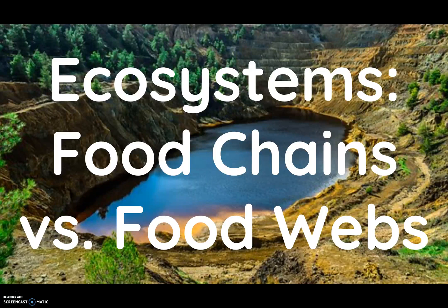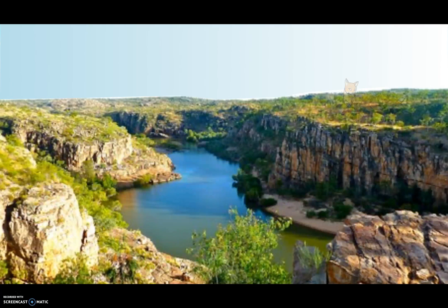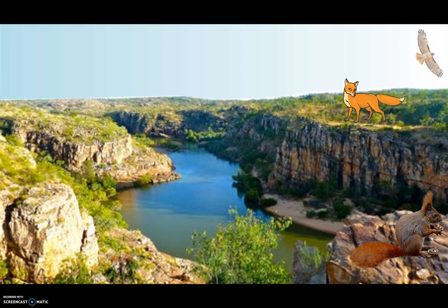You may be wondering what an ecosystem is. Well, an ecosystem is a group of organisms and their living surroundings. In this ecosystem there's the foxes, the squirrels, the trees, the plants, the birds, and the rabbits.